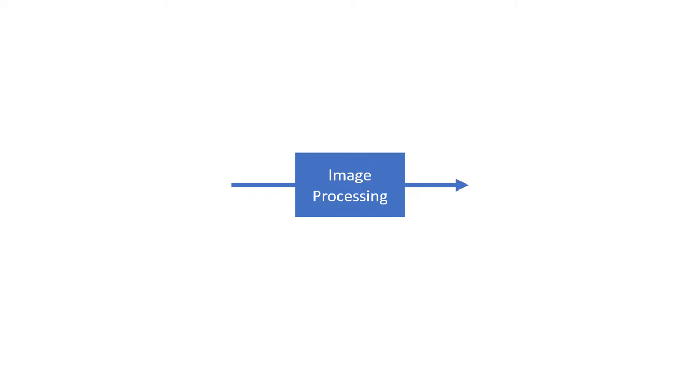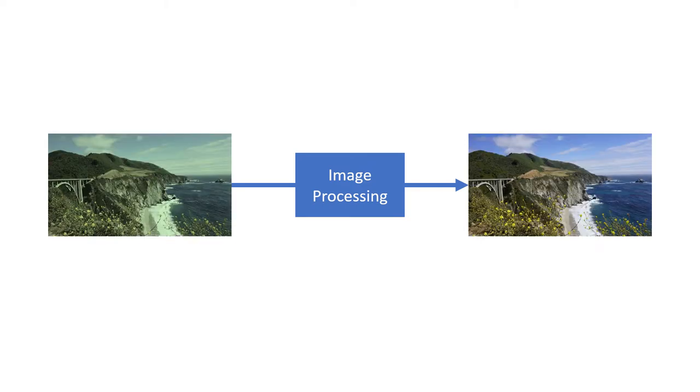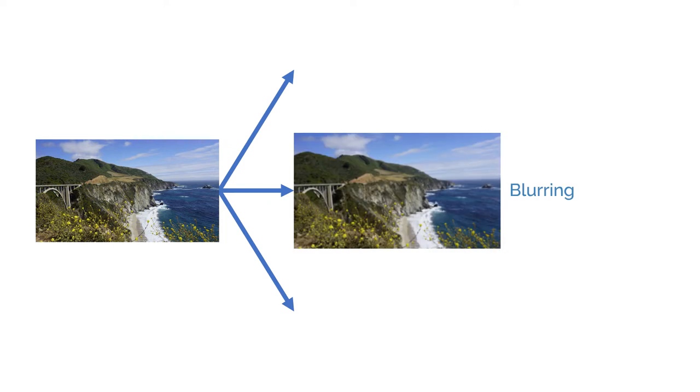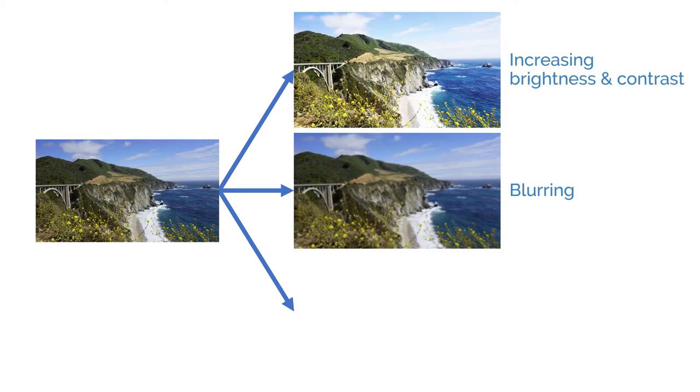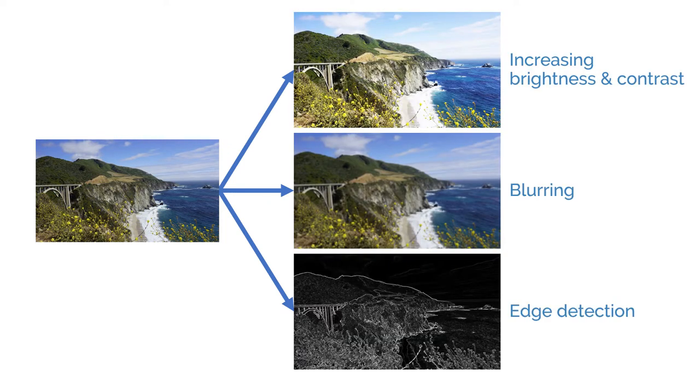Image processing focuses on processing images. What this means is that the input and the output are both images. An image processing algorithm can transform images in many ways: smoothing, sharpening, changing the brightness and contrast, highlighting the edges, and so on.